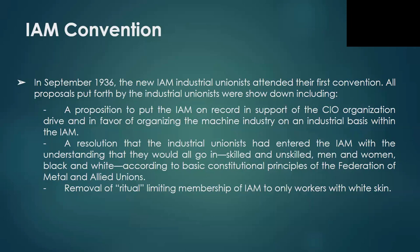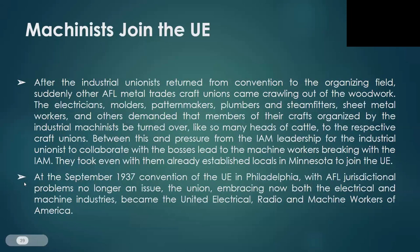A resolution entered by the industrial unionists stipulated they would go all in — skilled and unskilled, men and women, black and white — according to the basic constitutional principles of the Federation of Metal and Allied Trades, and including the removal of a ritual limiting IAM membership to only workers with white skin. After the industrial unionists returned from the convention to the organizing field, other AFL metal trades craft unions came crawling out of the woodwork — the electricians, molders, pattern makers, plumbers and steam fitters, sheet metal workers, and others — demanding that members of their crafts be turned over like cattle to the respective craft unions. Between this and pressure from IAM leadership for the industrial unionists to collaborate with the bosses, the machine workers broke with the IAM.